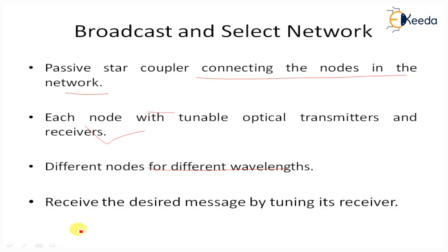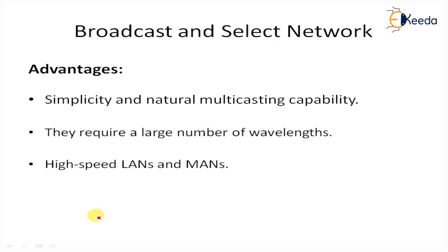A node selects a desired wavelength to receive the desired message by tuning its receiver to that particular wavelength in the broadcast network. One of the advantages is simplicity and natural multicasting capability — meaning the ability to transmit a message to multiple destinations.